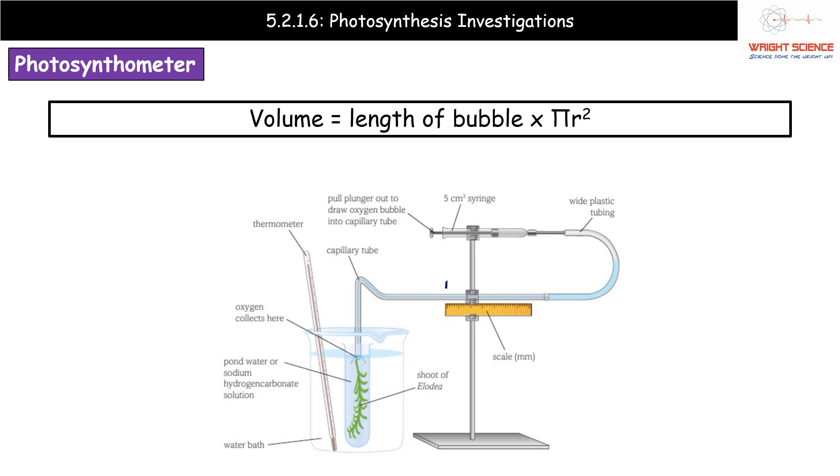Why would we do that? Because if we know the actual bore of our capillary tube, then we can calculate the volume of gas. All we need to do is length of bubble times pi r squared, and r is our radius in terms of our tube there. So very straightforward - pi r squared, because that's all to do with circles. But because we've got a long bubble, times it by the length.